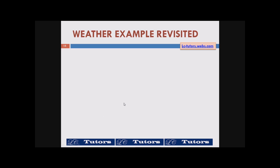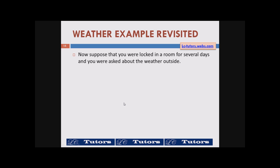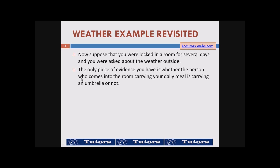Let's now revisit the weather problem. Suppose that you were locked in a room for several days and were asked about the weather outside — which is similar to the coin tossing problem. In the coin tossing problem we didn't know what was behind the curtain; here similarly you are in a locked room and don't know the weather outside. The only piece of evidence you have is whether the person who brings your daily meal is carrying an umbrella or not.